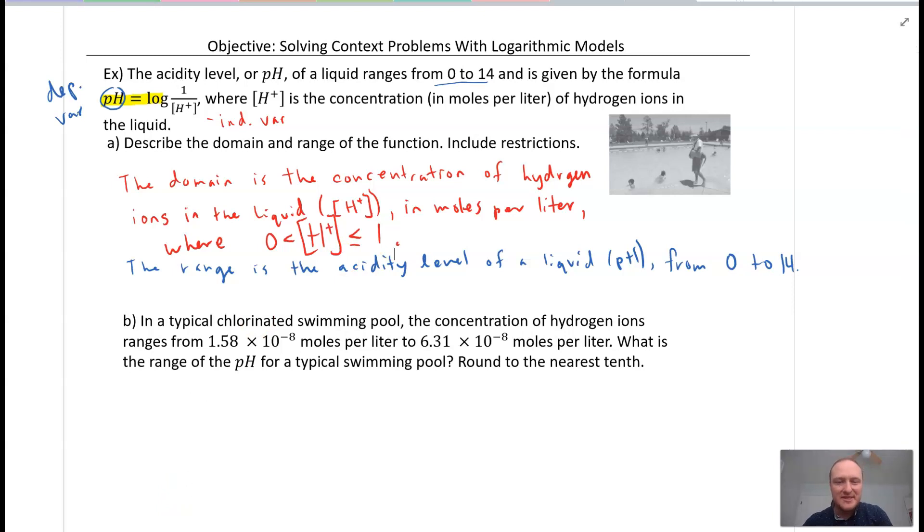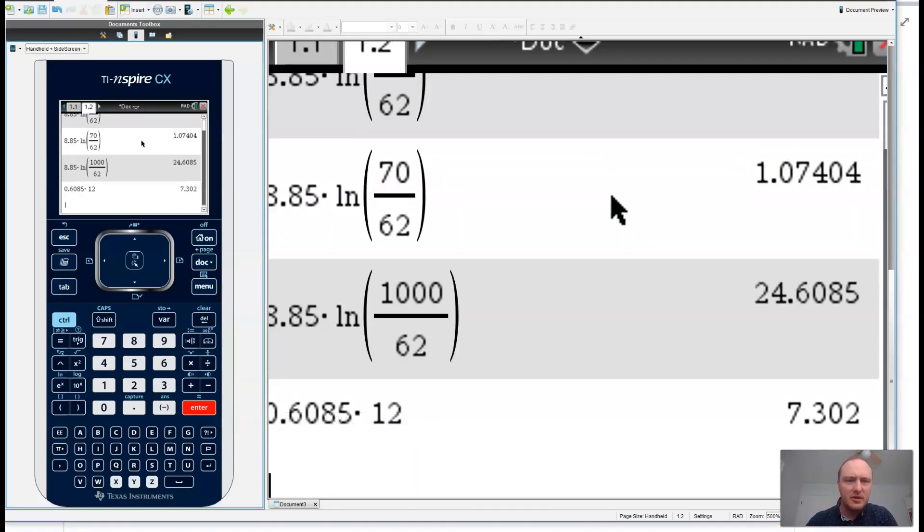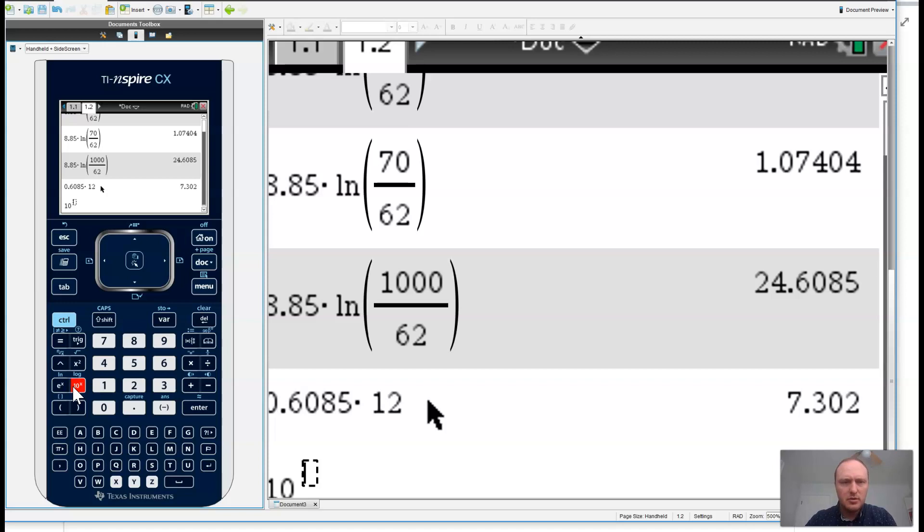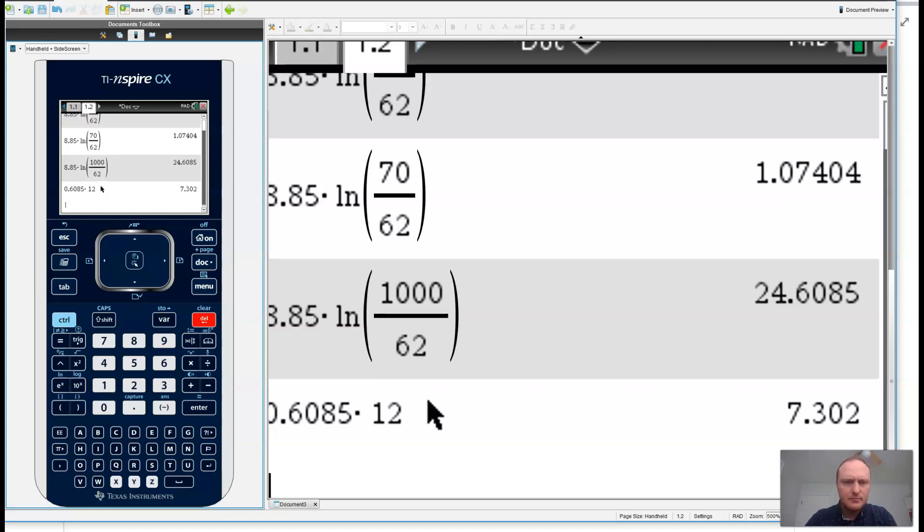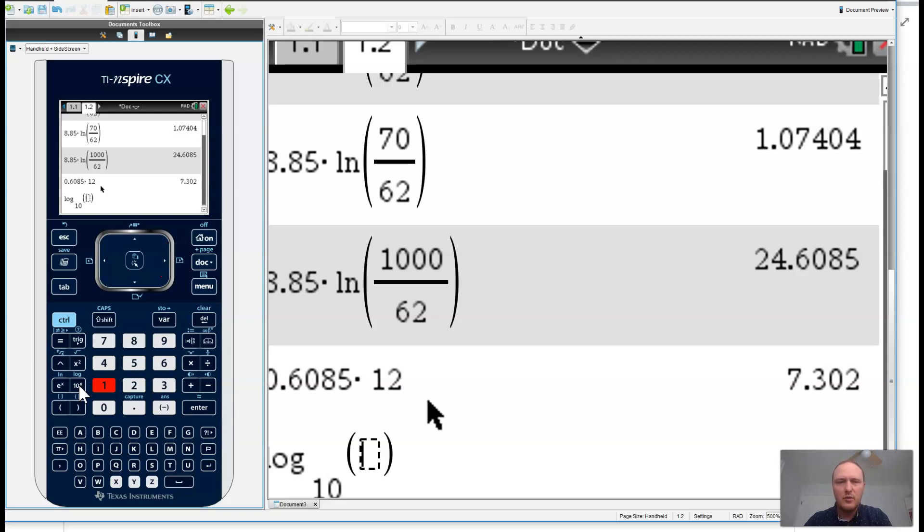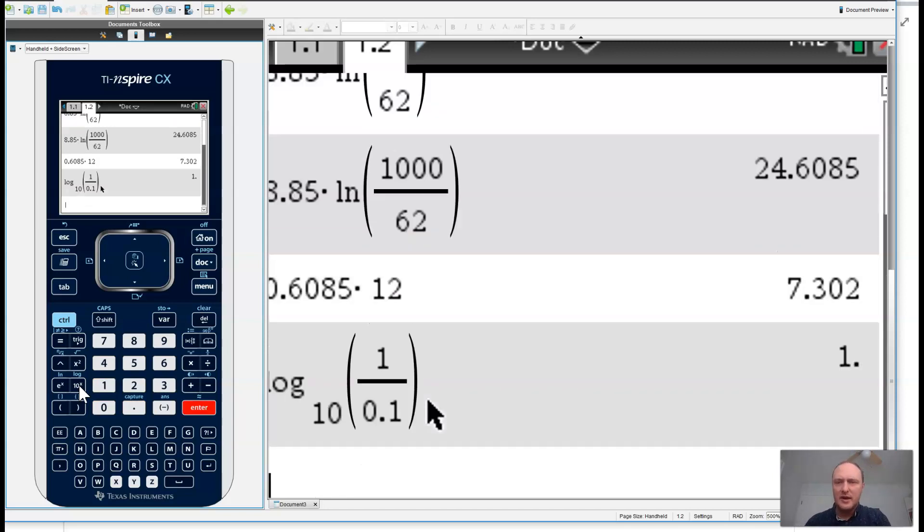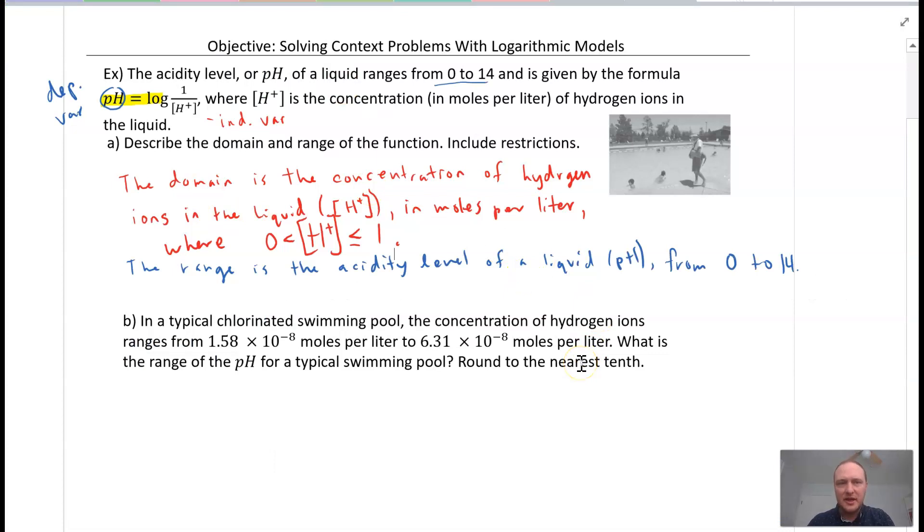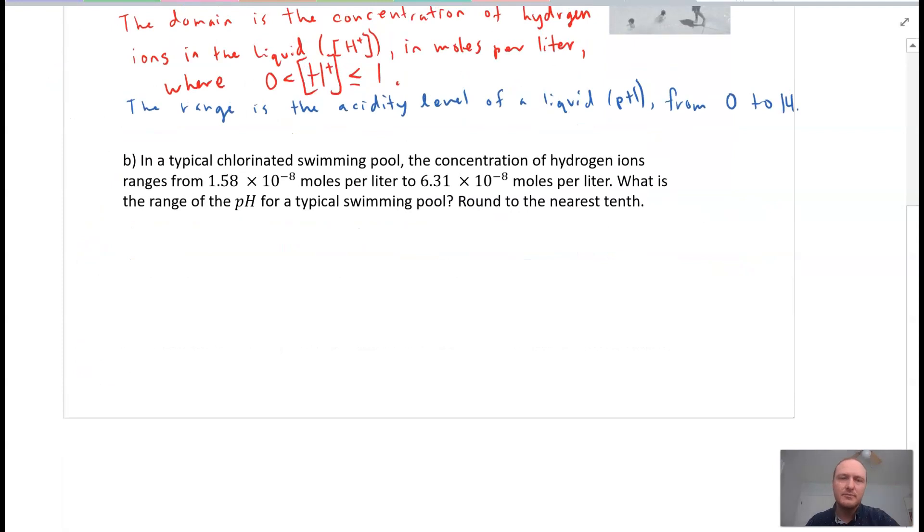And again, if you have a calculator, if you want to test these out, we can go ahead and punch in log base 10 of 1 divided by, and we can make it something super small, like 0.1, and we get 1. So that just shows you that you're on the right track with your domain and range. So there's domain and range of this problem. And you really have to utilize your critical thinking here. These are not very easy to calculate. So you have to do some thinking.